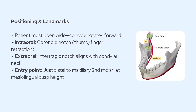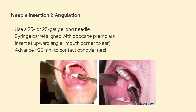While the topical is working, get your syringe ready. You'll be using a 25 or 27 gauge long needle for this. Angulation is super important here — you want to align the barrel of the syringe over the opposite premolars. So if you're anesthetizing the lower left, your barrel goes toward the right corner of the mouth. Insert the needle just distal to the upper second molar and follow a slightly upward path, almost like the takeoff angle of a plane. That imaginary line you're aiming along goes from the corner of the mouth to the intertragic notch, and the patient's mouth has to stay open this whole time.